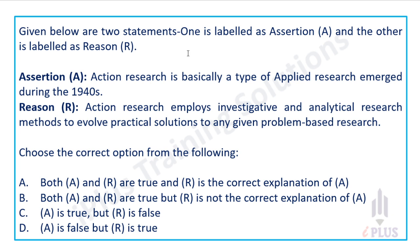Given below are two statements. One is labelled as Assertion and the other is labelled as Reason — this is an assertion-reason type question. Assertion: Action research is basically a type of applied research that emerged during the 1940s. Reason: Action research employs investigative and analytical research methods to evolve practical solutions to any given problem.